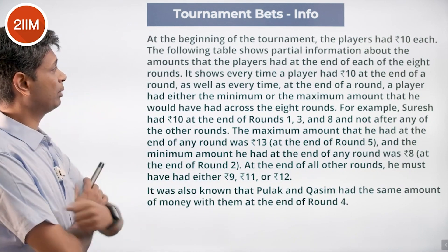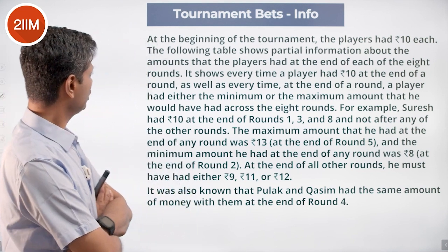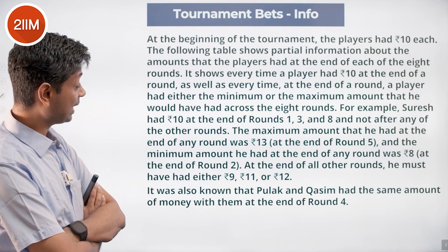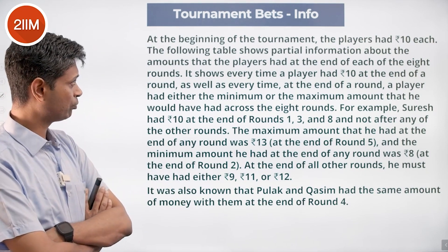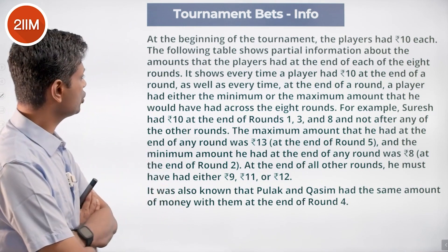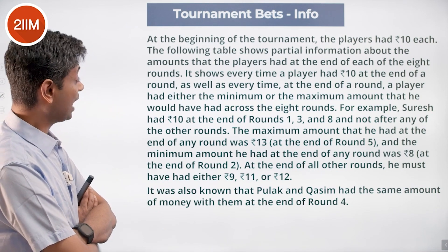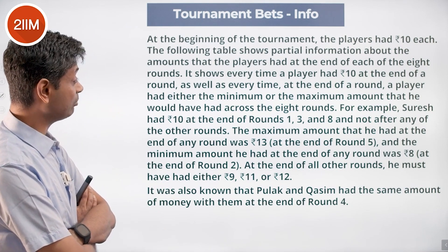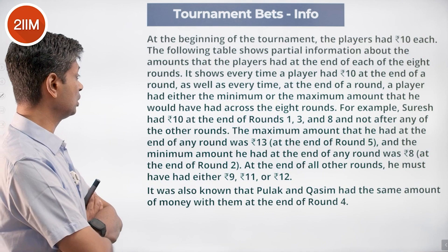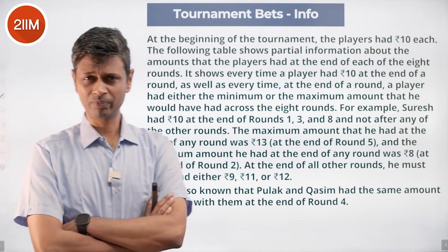At the beginning of the tournament, the players had rupees 10 each. The following table shows partial information about the amount that the players had at the end of each of the eight rounds — specifically every time a player had rupees 10, and every time a player had either the maximum or minimum amount across the eight rounds.